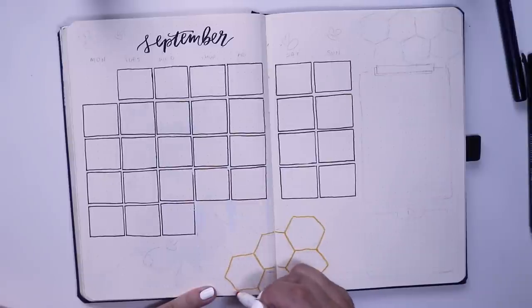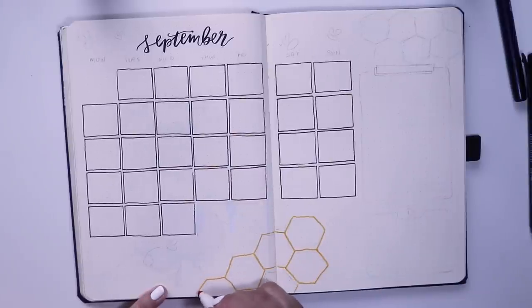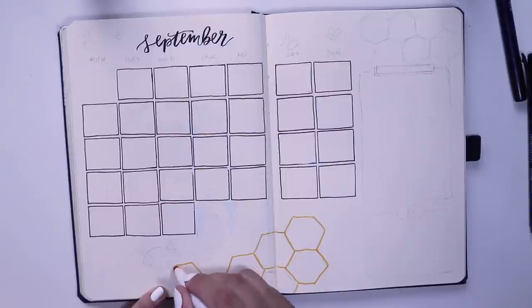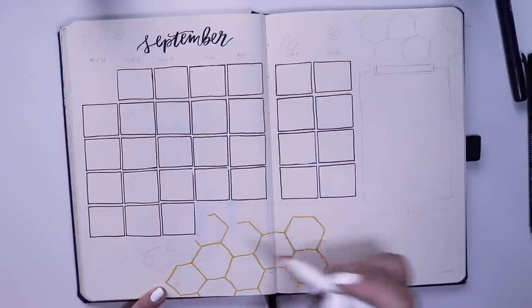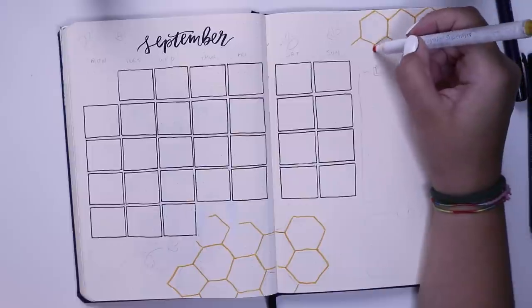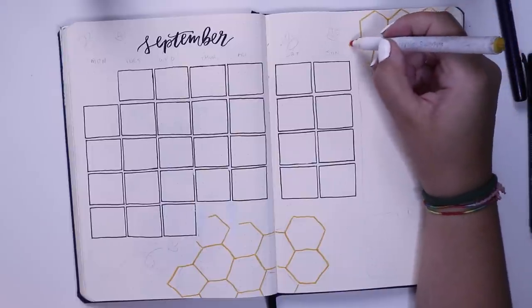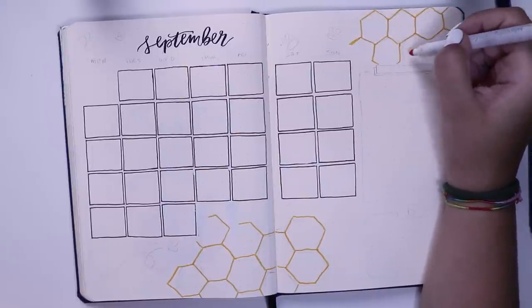For the first few, I sketched them out in pencil first, which I do recommend you doing because it can get a little bit confusing trying to get these all perfect. But after a while, I just kind of got the hang of it and just continued drawing them out.